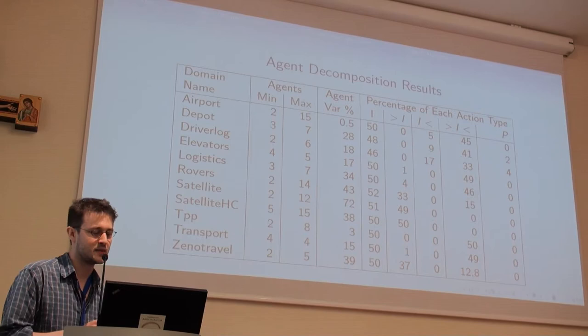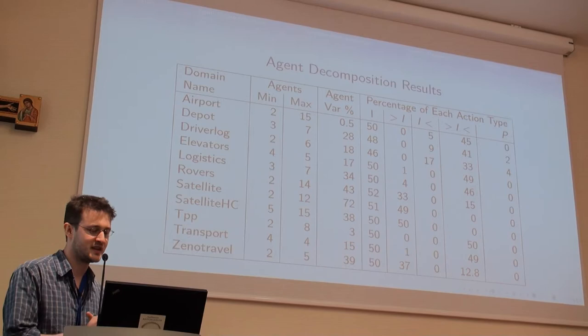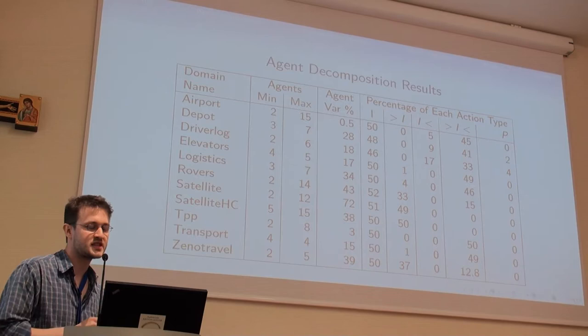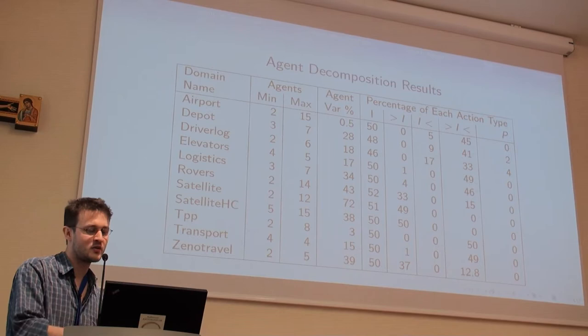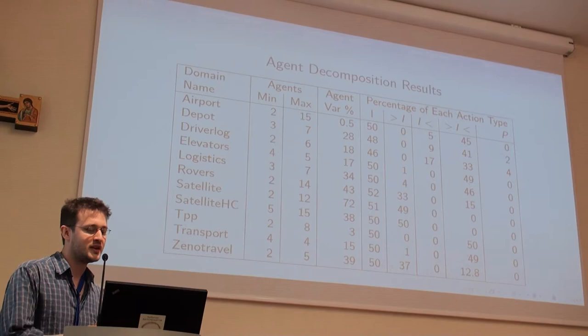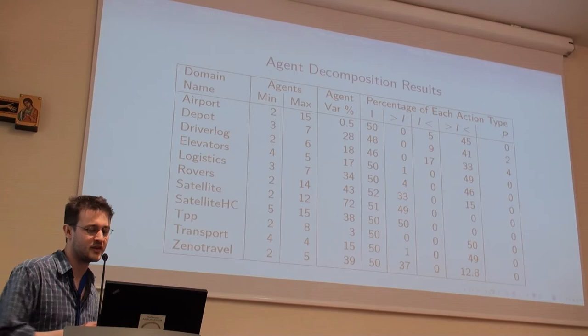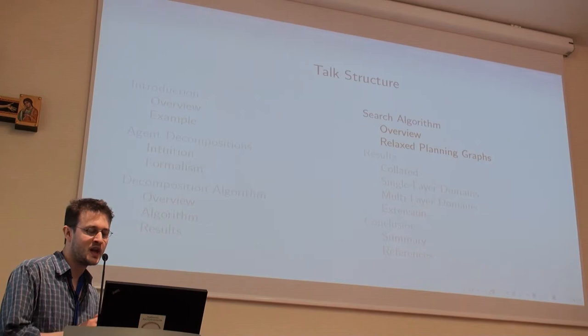Here are the results of running that algorithm on the IPC domains — these are all the domains for which it returns a decomposition. One thing to note is the agent variable percentage column: the percentage of variables in the domain that belong to an agent in the decomposition. It varies wildly and doesn't seem to be related to how well we plan. For example, in the airport domain, which we plan very fast in, very few of the variables are actually used to decide what the agents are — the rest are public or environment variables.